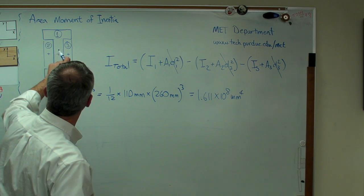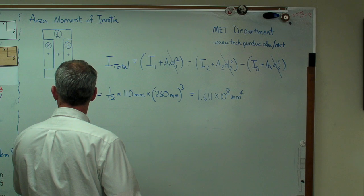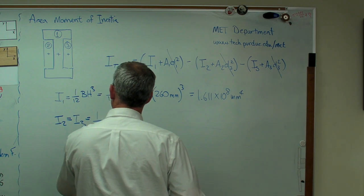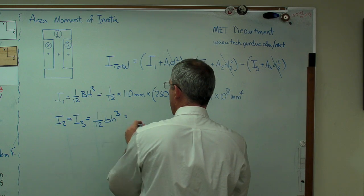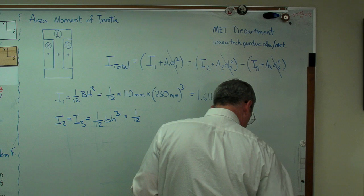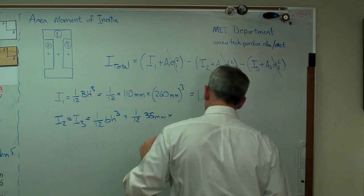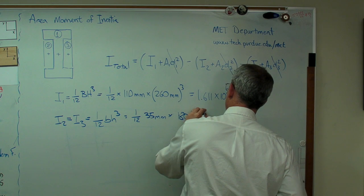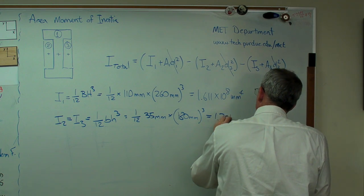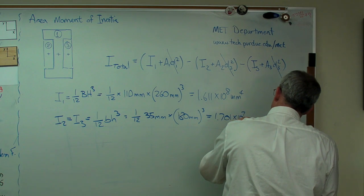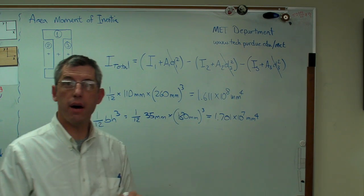The area moments of inertia of boxes 2 and 3 are the same, so I only need to figure out one of them. I3 equals 1 over 12 base times height cubed. I'm going to designate those with a small letter rather than a capital letter. So that's 1 over 12, the base is 35 millimeters, and that distance is 180 cubed. That works out to 1.701 times 10 to the 7th millimeters to the fourth. Another real big number, but around 10 times smaller than that one.